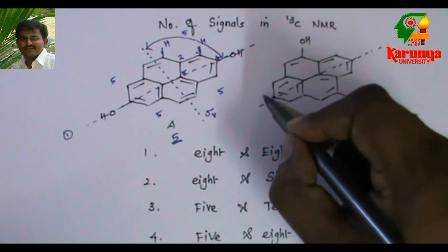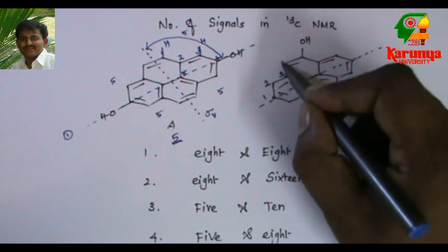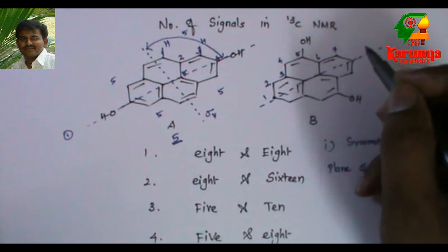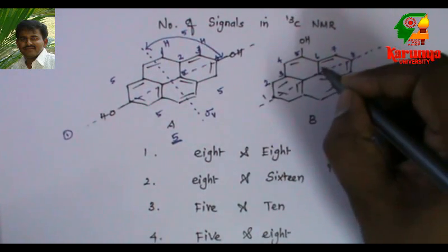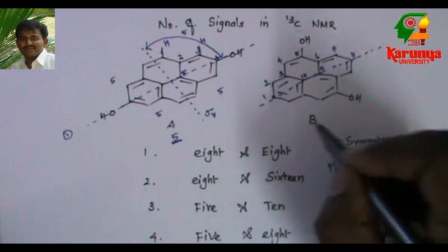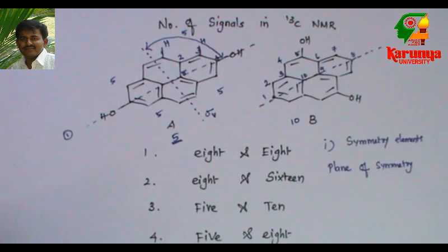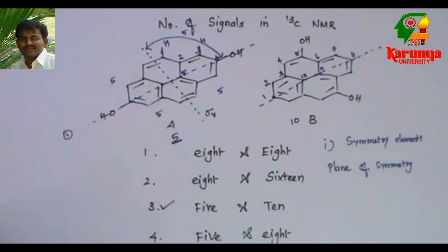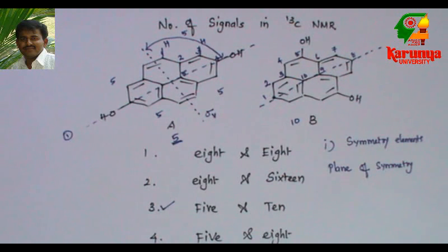One, two, three, four, five, six, seven, eight, nine, ten. So there are ten different carbons in this. So five and ten. These compounds will give five and ten signals in the C-13 NMR.